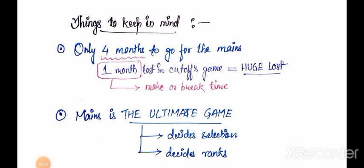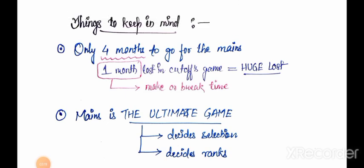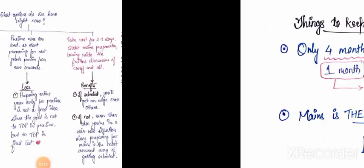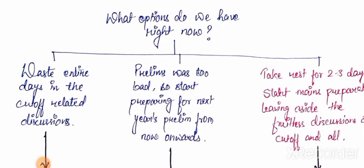Mains is the ultimate game. You don't have to top in prelims. Qualifying prelims won't give you any award or tag - no Padma Awards, no Bharat Ratna, nothing. The ultimate game is mains. Mains will decide the selection and the rank you are going to get. Mains decides whether your name is going to be in the final list or not.